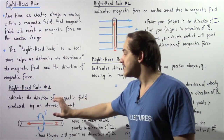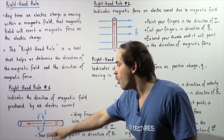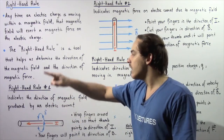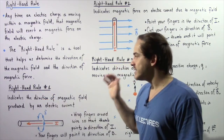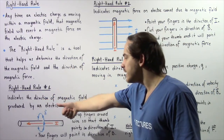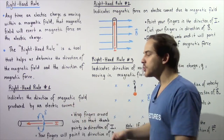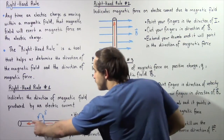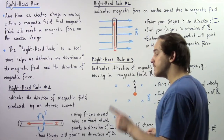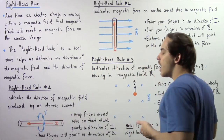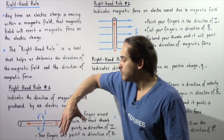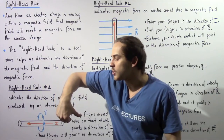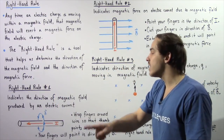Our magnetic field consists of concentric circles that form a clockwise pathway. To summarize: we take our right hand, wrap our fingers around the wire, and the direction of our fingers indicates the direction of our magnetic field. Now if we reverse the direction of our electric current so it points in the positive direction along the x-axis, we simply point our thumb in the opposite direction, and the concentric circles now point in the counter-clockwise direction.